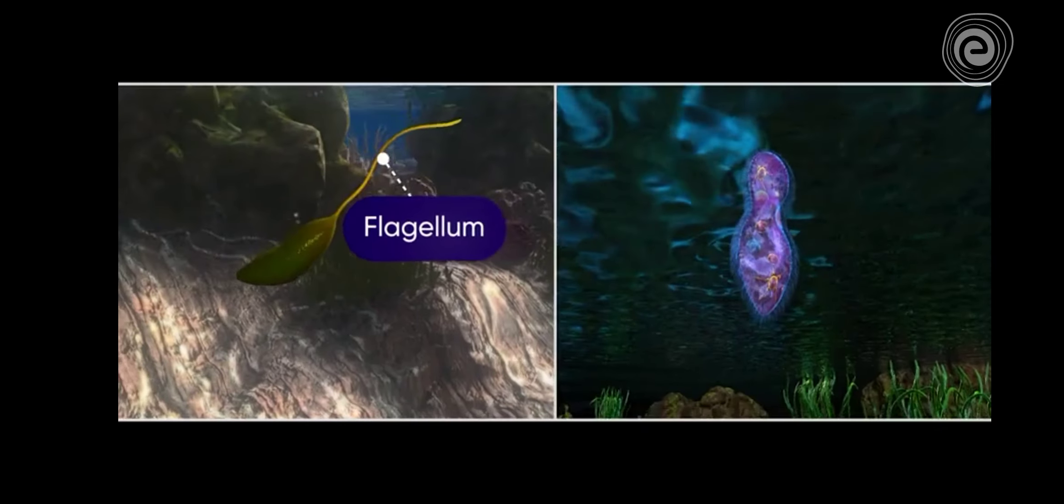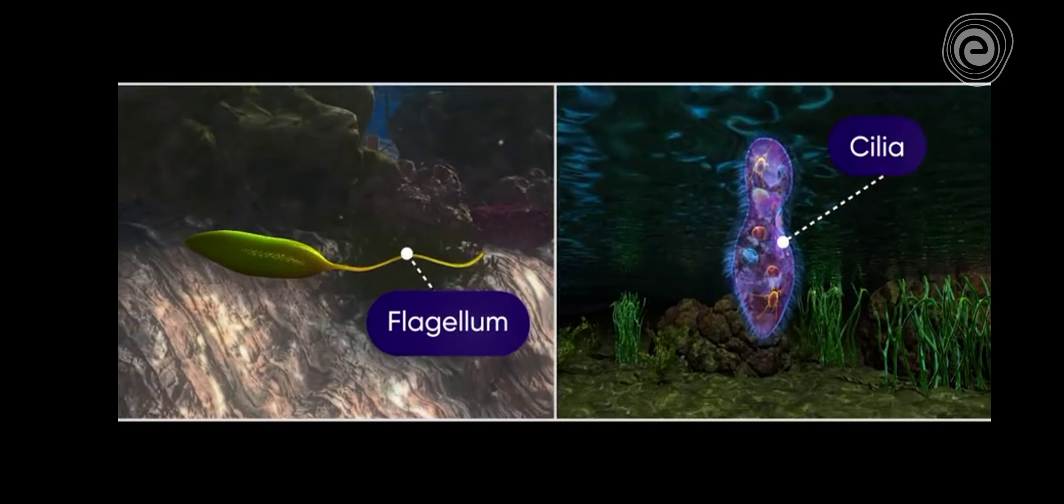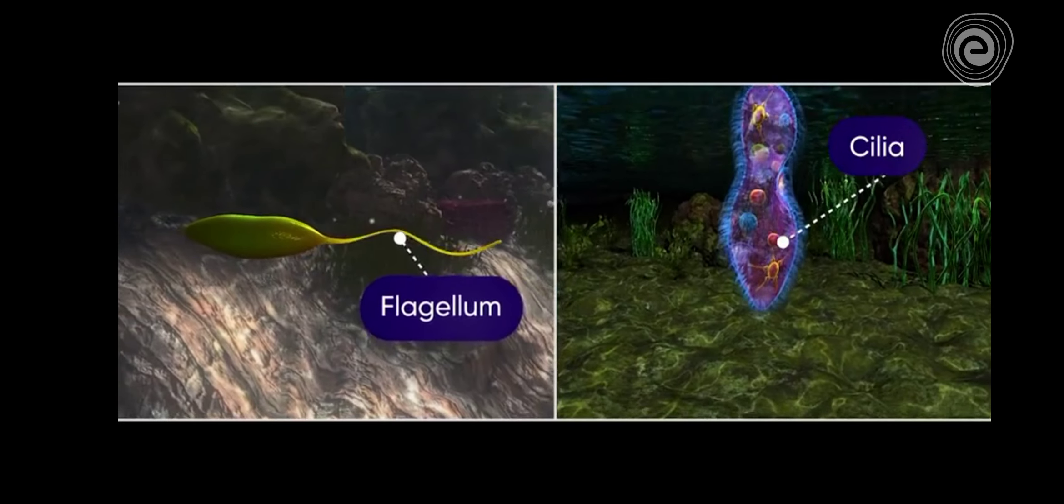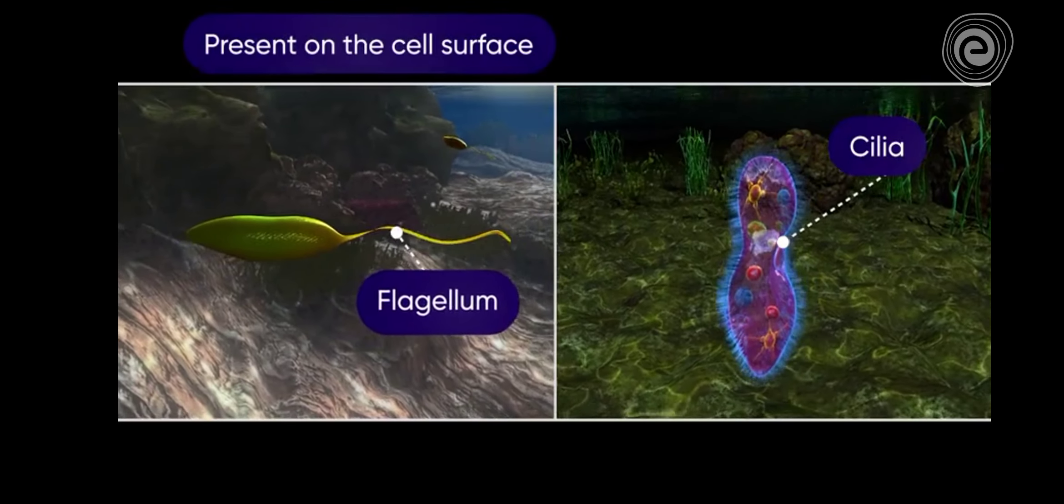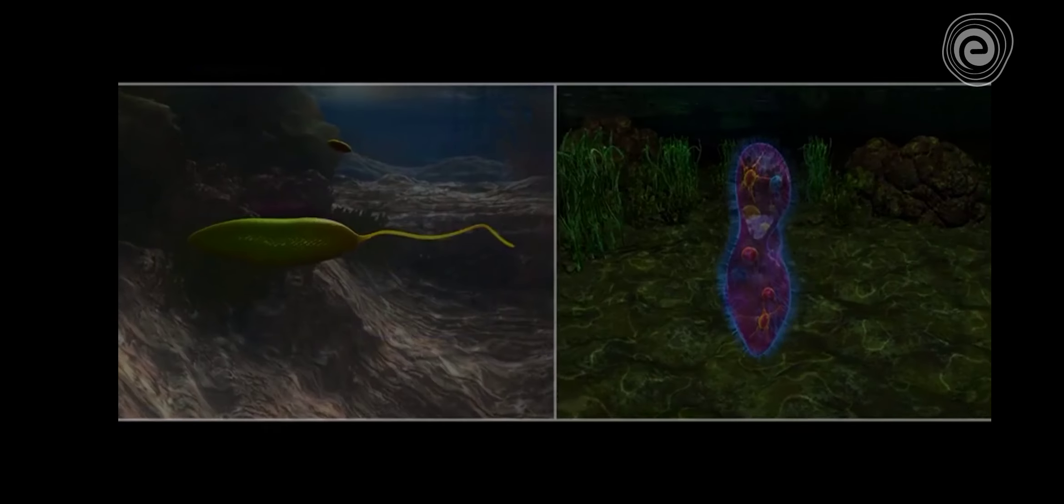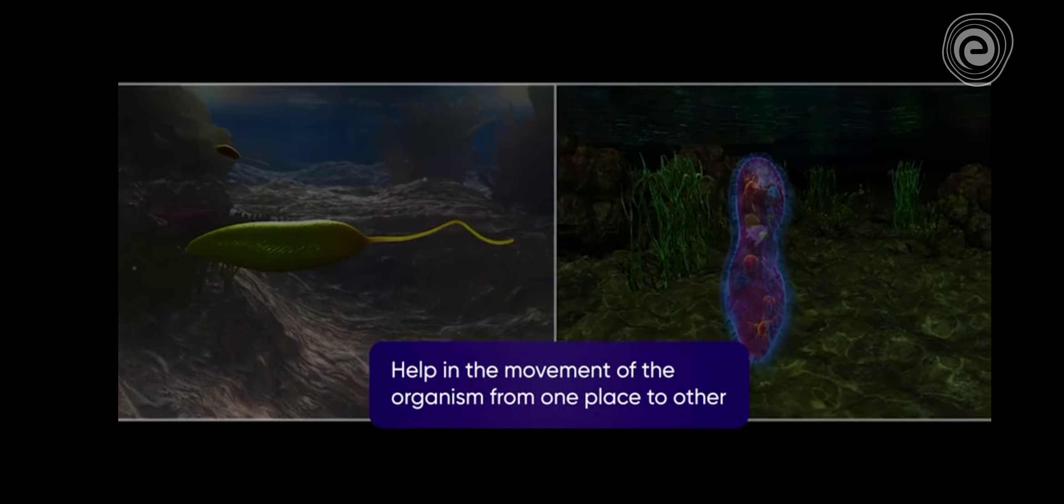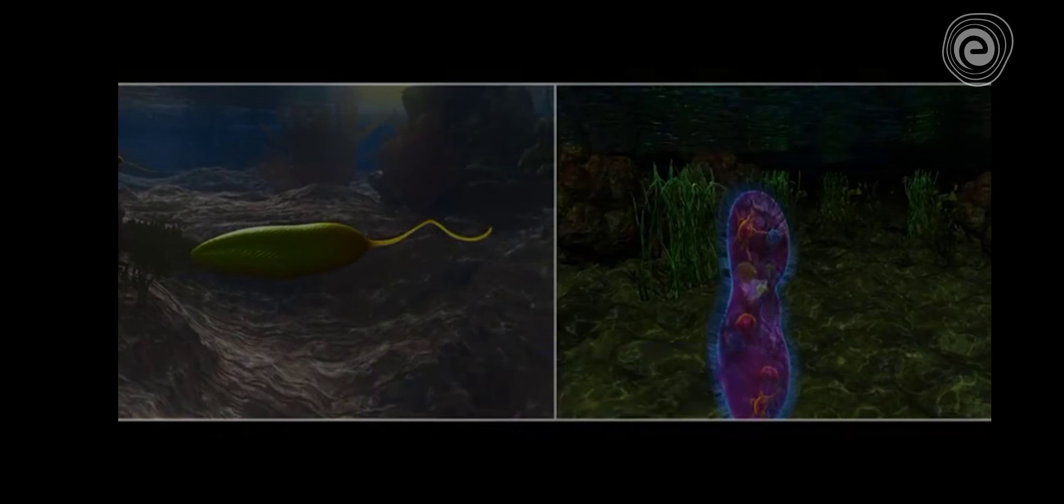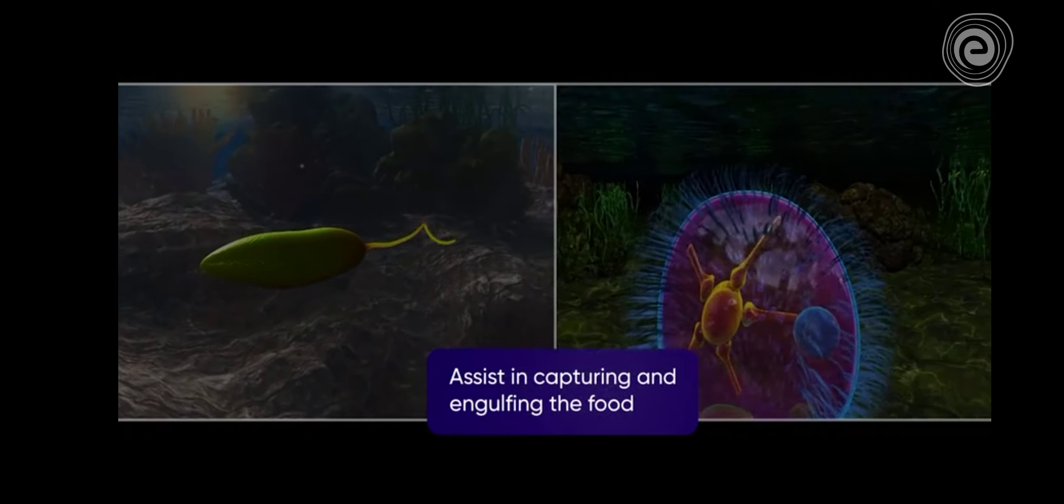The cilia and the flagella are specific organelles present on the cell surface. They help in the movement of the organism from one place to another, and in some organisms they also assist in capturing and engulfing the food.